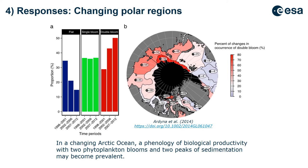In polar regions, which are changing most dramatically with climate change, more ice is melting and there is more open ocean in the Arctic over the past 20 years. Scientists have shown this has also been changing phytoplankton phenology — one study showed that a phenology of biological productivity with two phytoplankton blooms and two peaks of sedimentation became more prevalent in Arctic regions in more recent years.